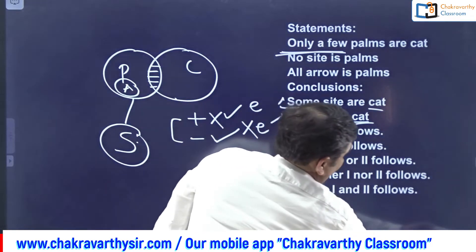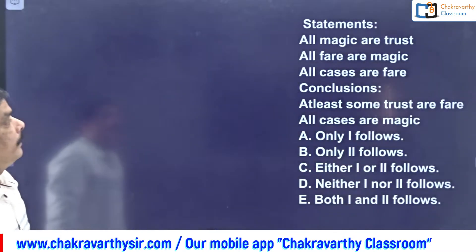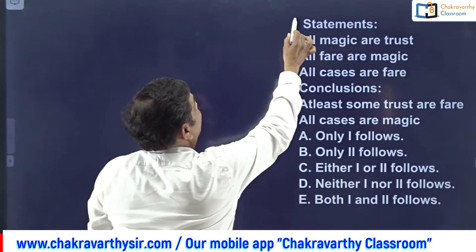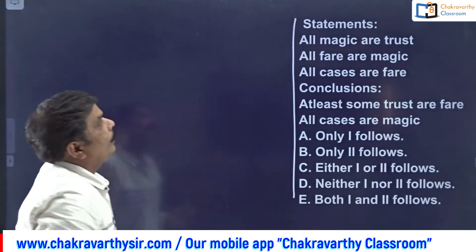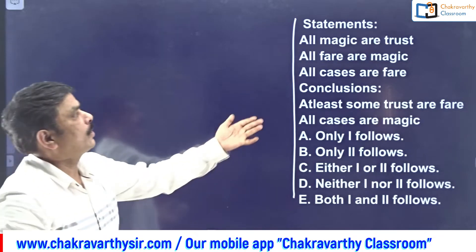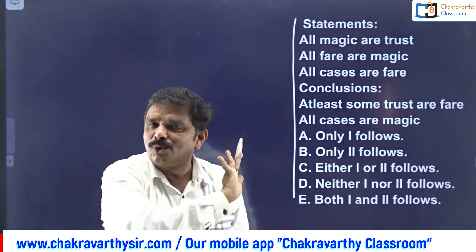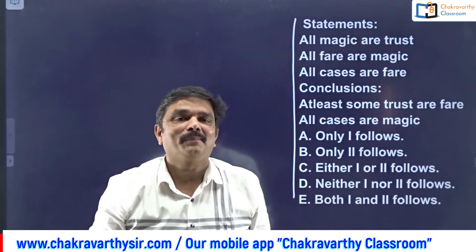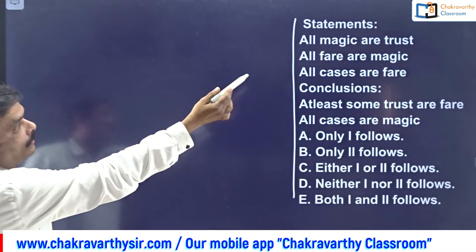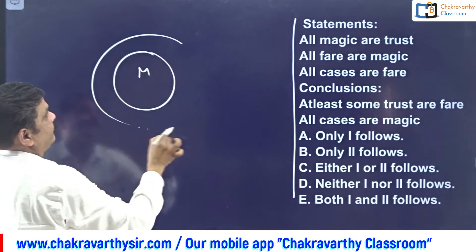The next question is a simple one that you can do very easily, because all three given statements are positive. When all statements are positive, there is no need to go for any alternate diagram. The statements are: All magnetic are trust, All fair are magnetic, and All cases are fair.